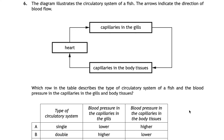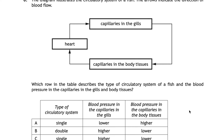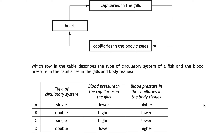Question six shows the circulatory system of a fish, with arrows indicating direction of blood flow: heart to capillaries in the gills, to capillaries in the body tissues, and back to the heart. The correct answer is C. Fish have a single circulatory system — the blood passes through the heart once per circuit. Blood pressure at the gills is high, where oxygen enters the bloodstream, and is lower at the body tissues where oxygen is passed on.